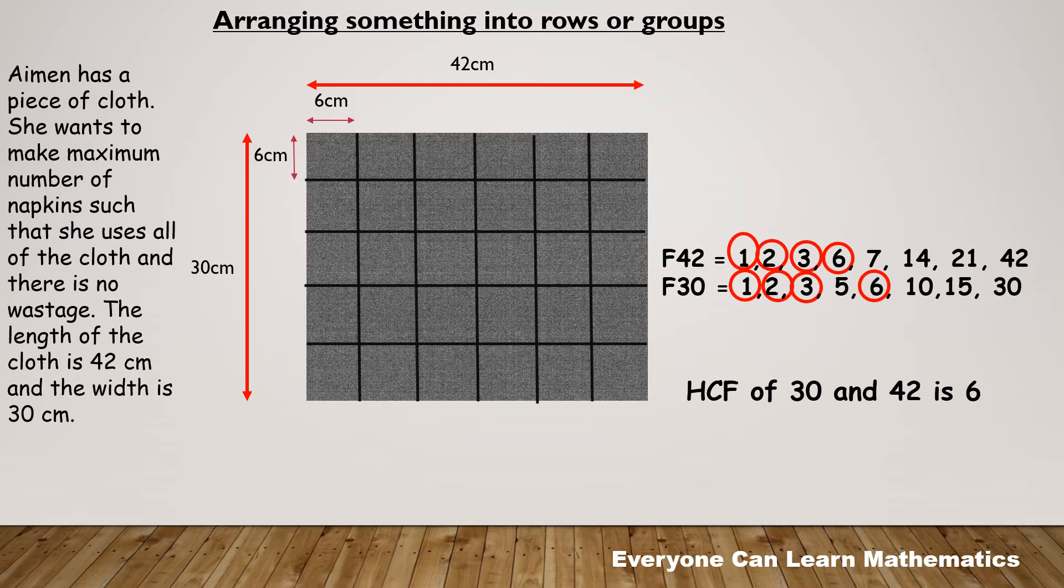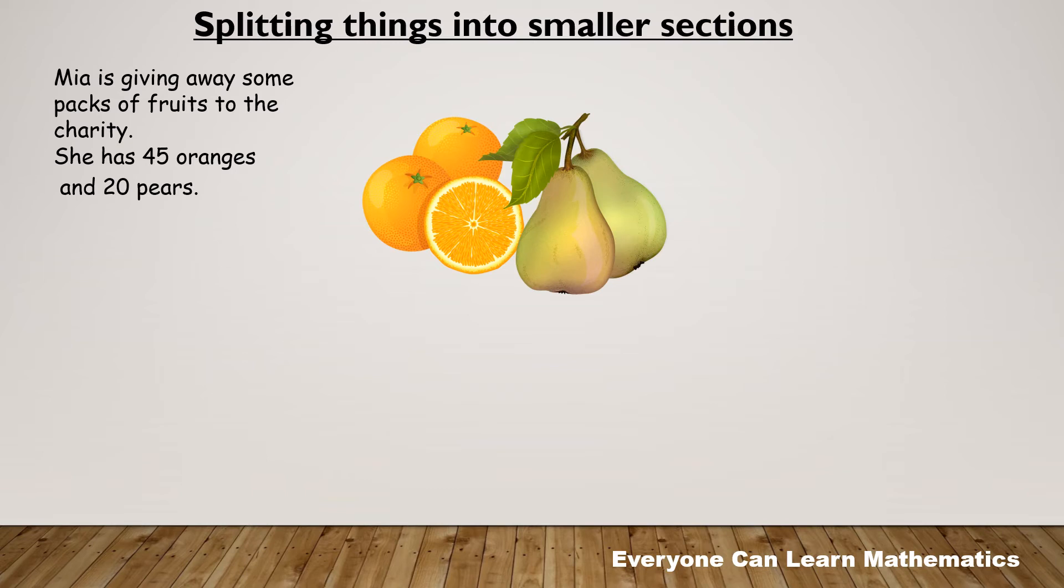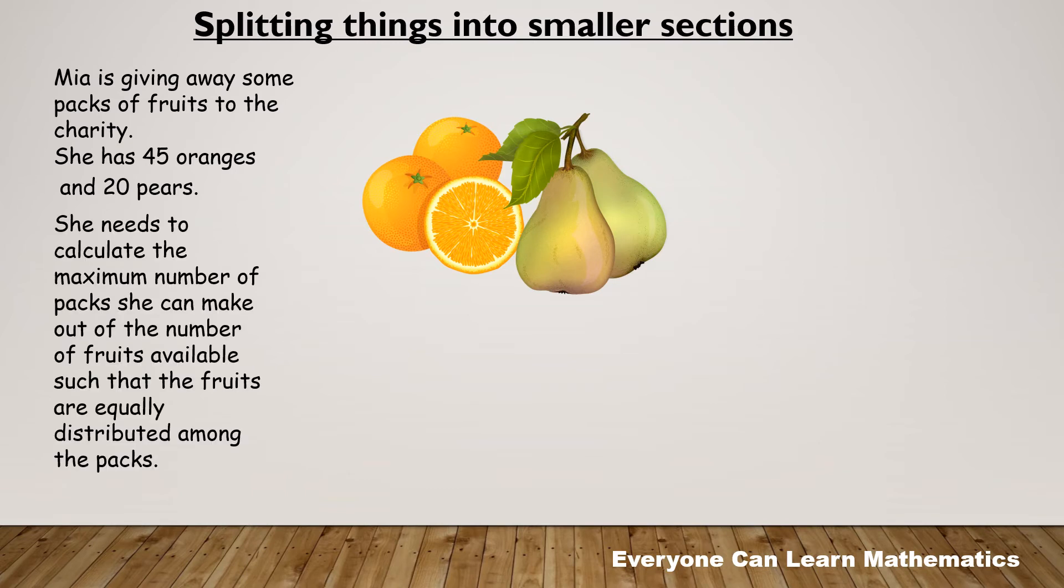Here we will investigate how HCF can help us to split things into smaller sections. Mia is giving away some packs of fruits to the charity. She has 45 oranges and 20 pears. She needs to calculate the maximum number of packs she can make out of the number of fruits available such that the fruits are equally distributed among the packs. Let's see if we can help Mia with our knowledge of highest common factor.